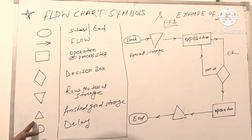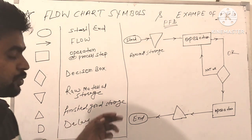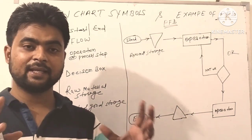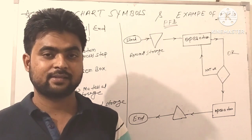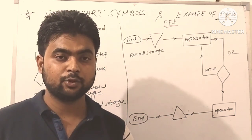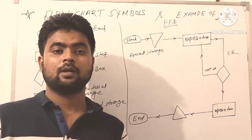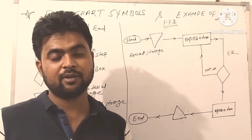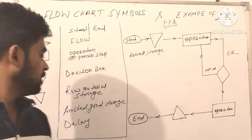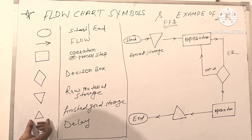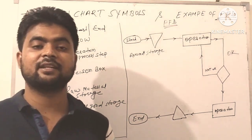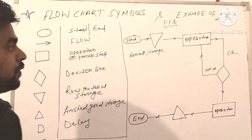The sixth symbol is a triangle, used for finished goods storage. After completing the process and making your parts, you keep them in a storage room ready for dispatch and shipping — you use this triangle symbol. And the seventh symbol is used for delay — wherever the process is delayed, you can use this symbol.